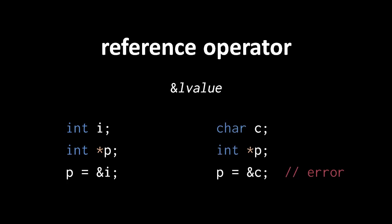It's very important to understand that the reference operator used on an int variable produces an int pointer, not any other kind of pointer. If, say, we instead had a char variable c, the reference operator used on c returns a char pointer value, and so this assignment is invalid — we cannot assign a char pointer value to an int pointer variable. An int pointer and a char pointer are two different types, just like an int and a char are different types.